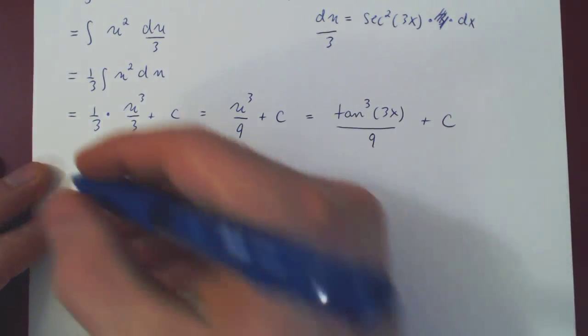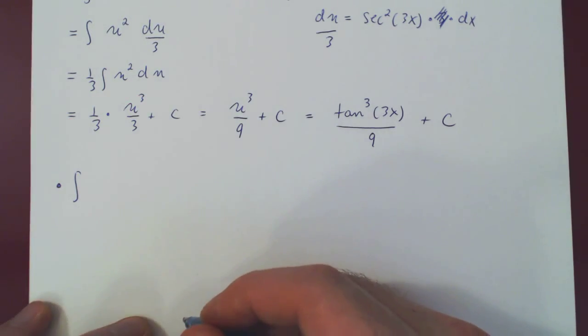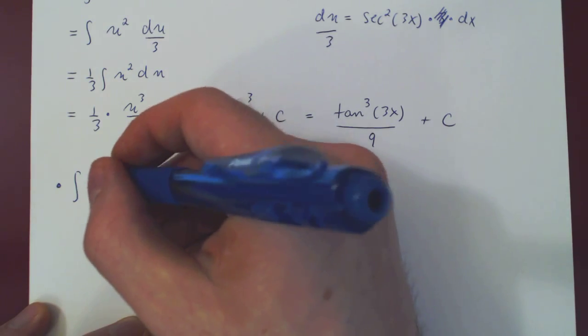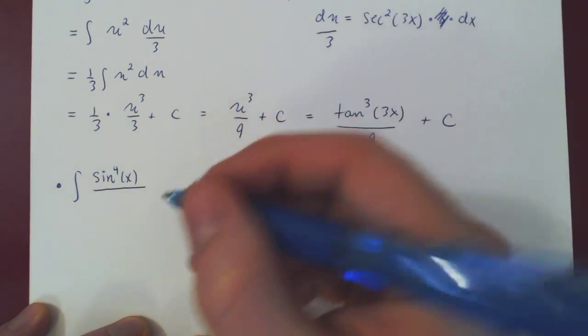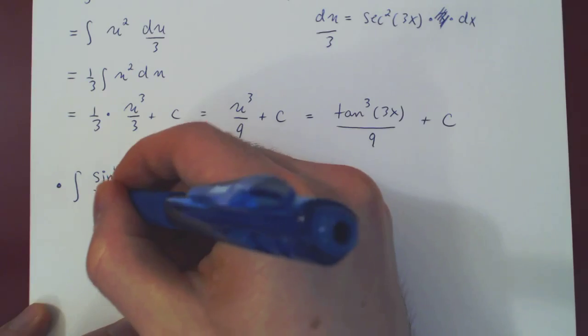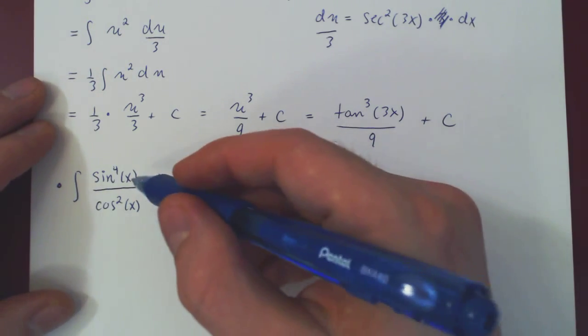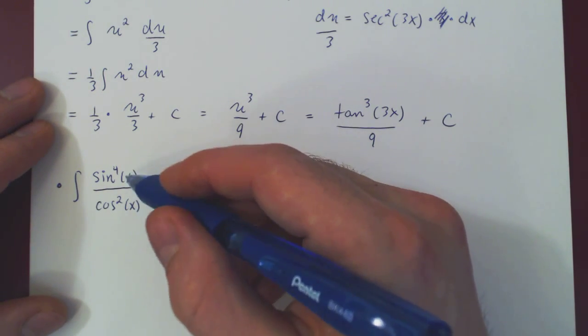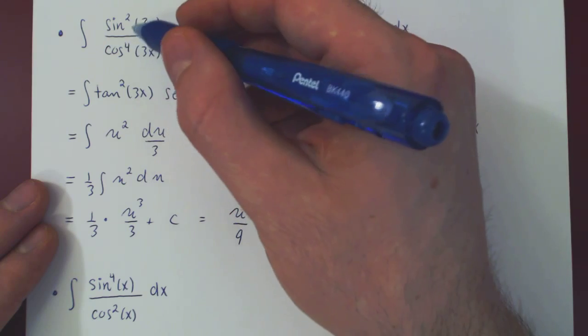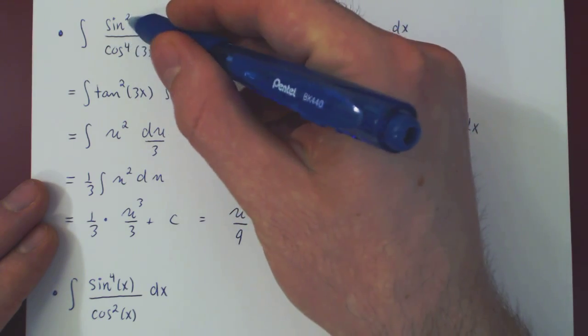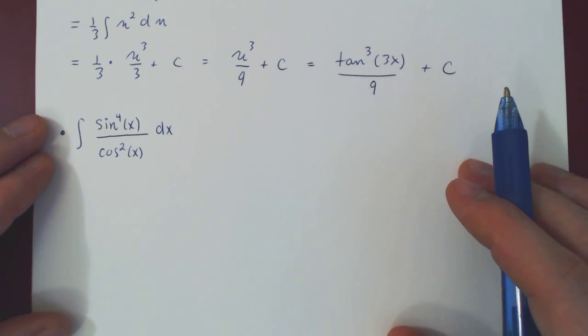The second one is a little more subtle. So what if we ask for the integral of sin to the 4 of x over cos squared of x? The difference with the first example is that basically just, ignoring the 3x being changed for an x, I've swapped the powers. It was here a sin squared over cos to the 4. Now it's a sin to the 4 over a cos squared.